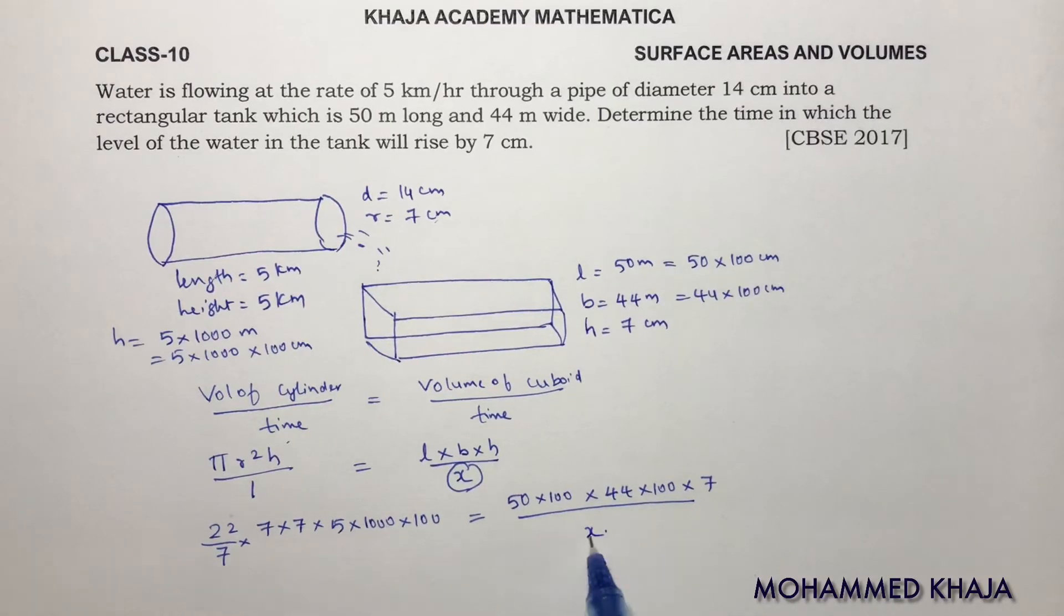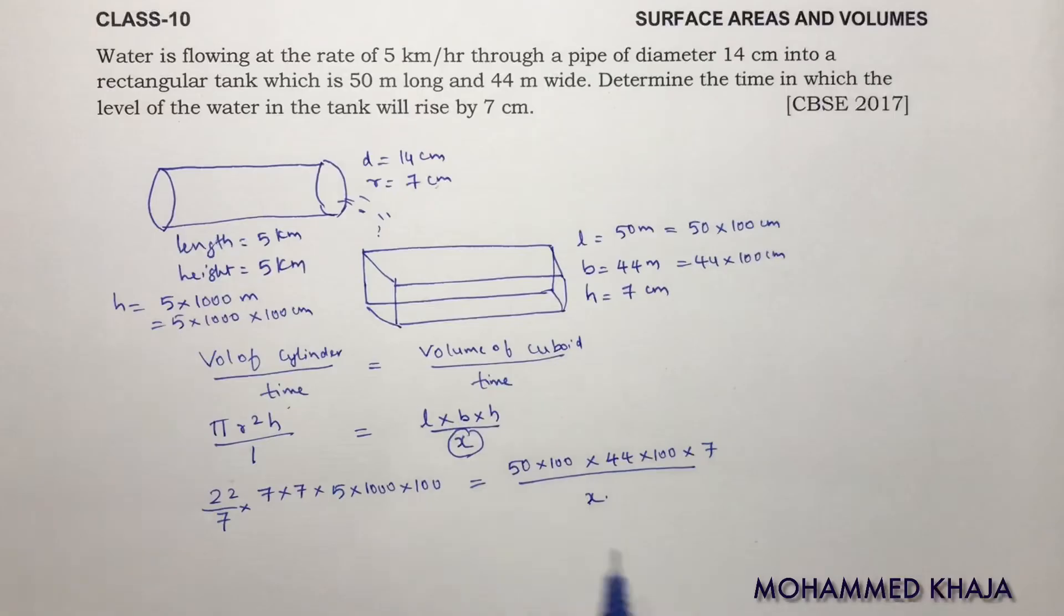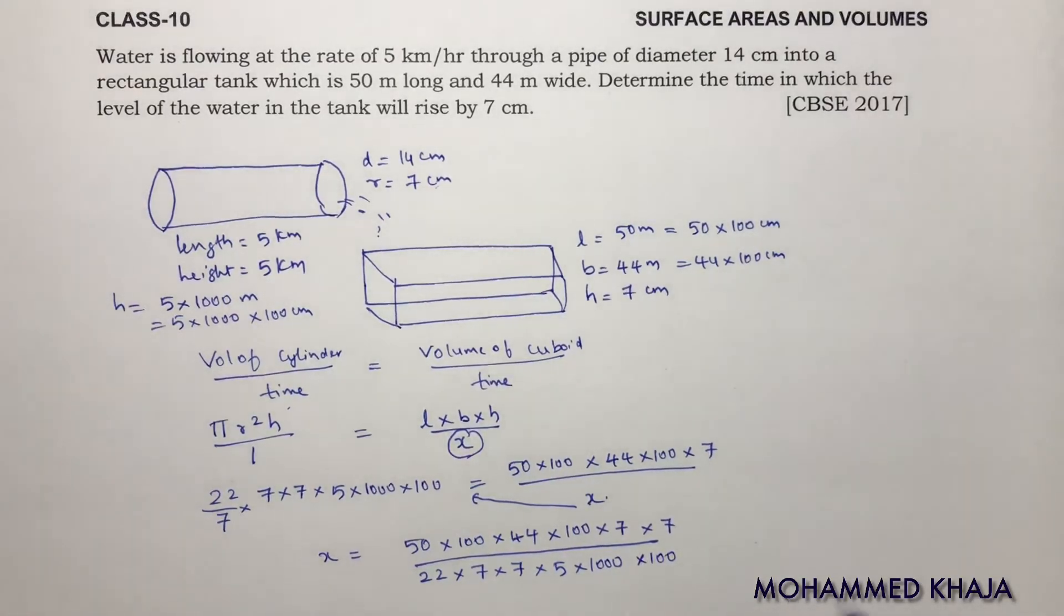I need to find the value of x. So what I will do, just I will transpose then I will start cancelling. So I will write x equals, x I will bring here. This is 50 into 100 into 44 into 100 into 7. In the denominator there is 7, so transpose it, you will get into 7. By all these values bring it to the denominator. So 22 into 7 into 7 into 5 into 1000 into 100.